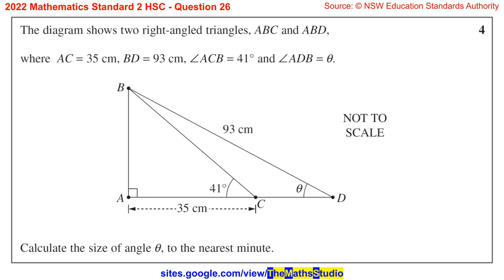Question 26. The diagram shows two right angle triangles, ABC and ABD, where AC equals 35 cm, BD equals 93 cm, angle ACB equals 41 degrees, and angle ADB equals theta. Calculate the size of angle theta to the nearest minute.